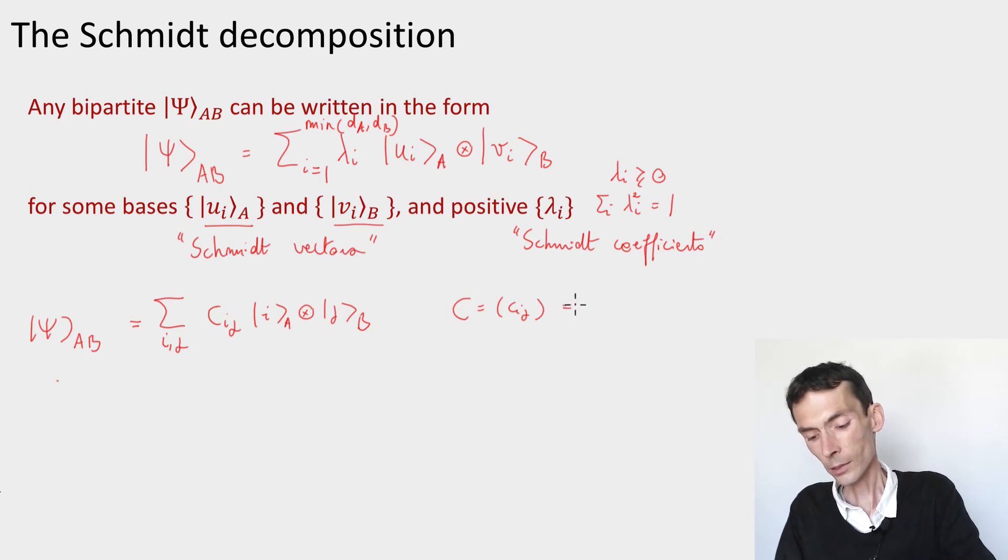So let's apply the SVD to this matrix C. We can always write it in a form sum over another index k of some coefficients, let's call them alpha k, vectors uk and vk.